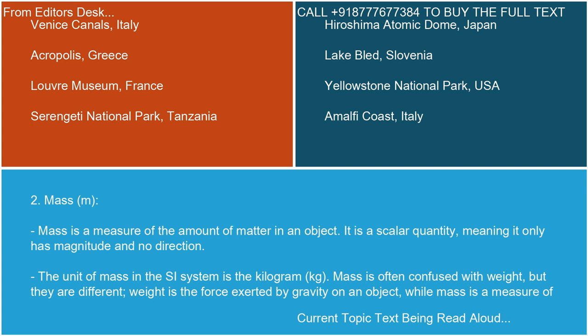Key Concept 2: Mass (m). Mass is a measure of the amount of matter in an object. It is a scalar quantity, meaning it only has magnitude and no direction. The unit of mass in the SI system is the kilogram (kg). Mass is often confused with weight, but they are different. Weight is the force exerted by gravity on an object, while mass is a measure of the object's matter.